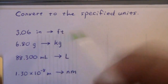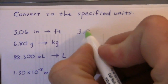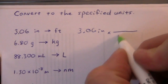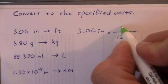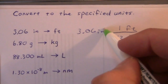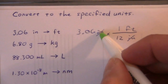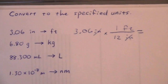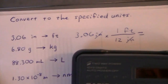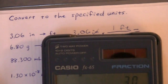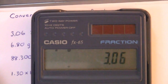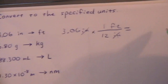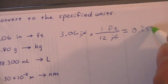Converting 3.06 inches to feet. We need to know how many inches are in a foot. There are 12 inches per foot, so we arrange this so that the inches will cancel — inches on top, inches on bottom. We do a little math: 3.06 divided by 12, and we get 0.255 feet.